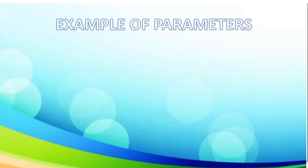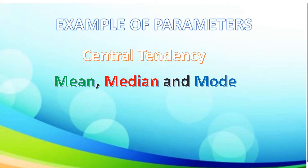Now, let's take some examples of parameters. We have measures of central tendency: mean, median, and mode, as well as standard deviation.